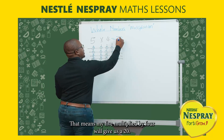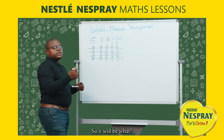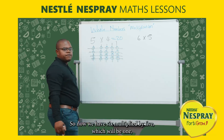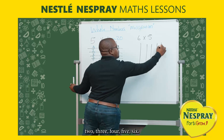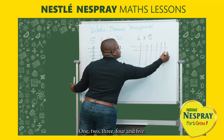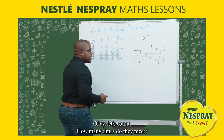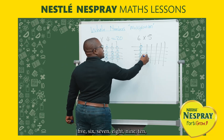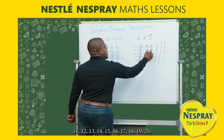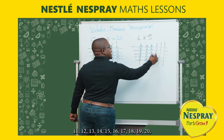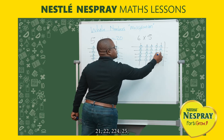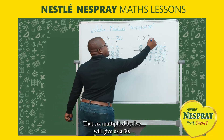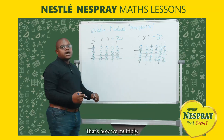That means five multiplied by four gives us twenty. Now let's check the last one: six multiplied by five. We have one, two, three, four, five, six and one, two, three, four, and five. Let's count how many times do they meet: one through thirty. So six multiplied by five gives us thirty. That's how we multiply two whole numbers.